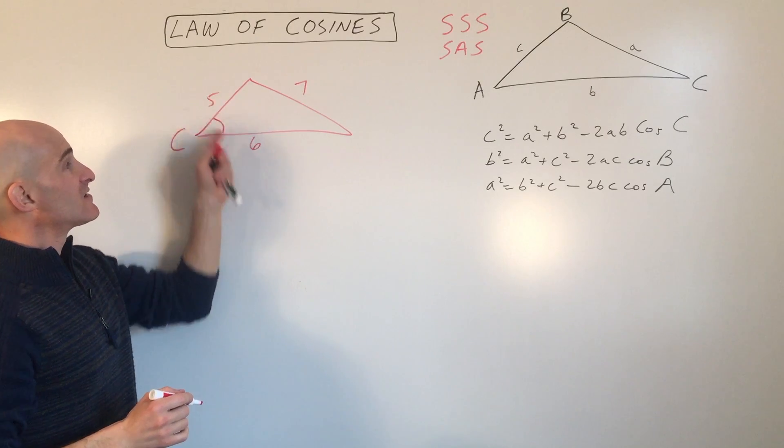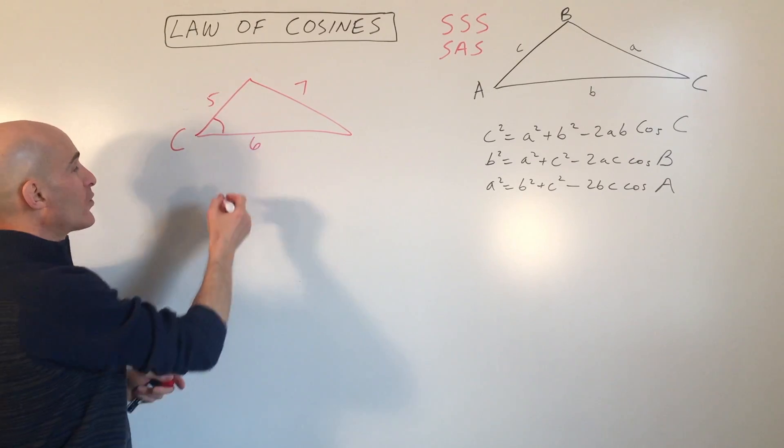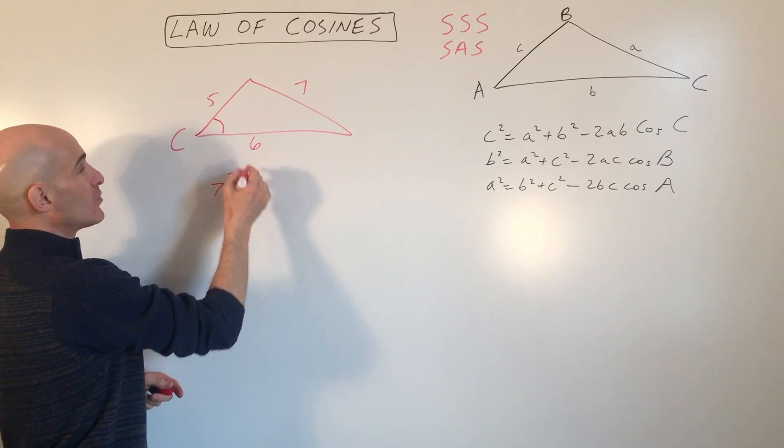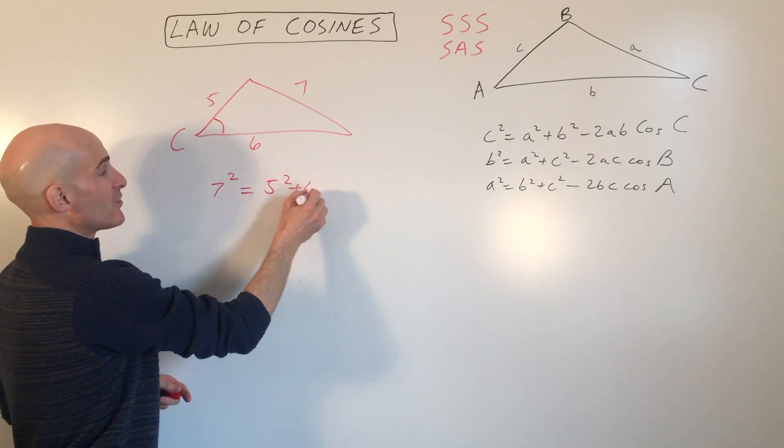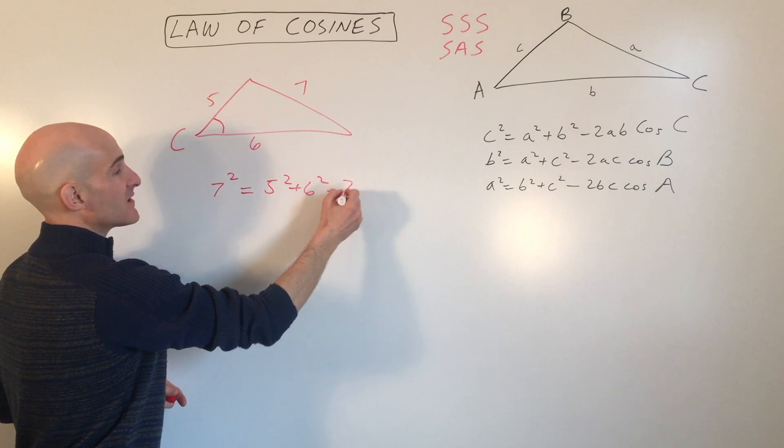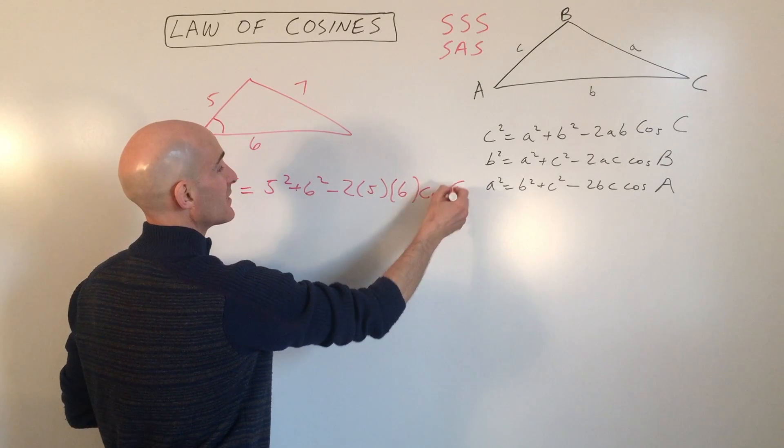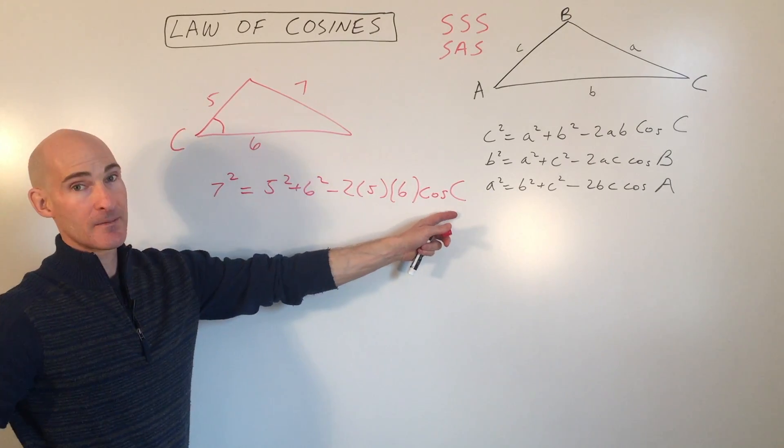So this would be side C, side A and B. So what we have here is we have 7 squared equals 5 squared plus 6 squared minus 2 times 5 times 6 times the cosine of angle C.